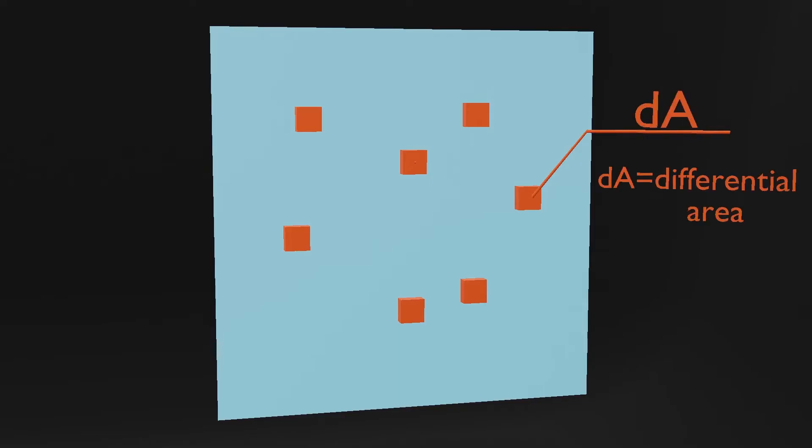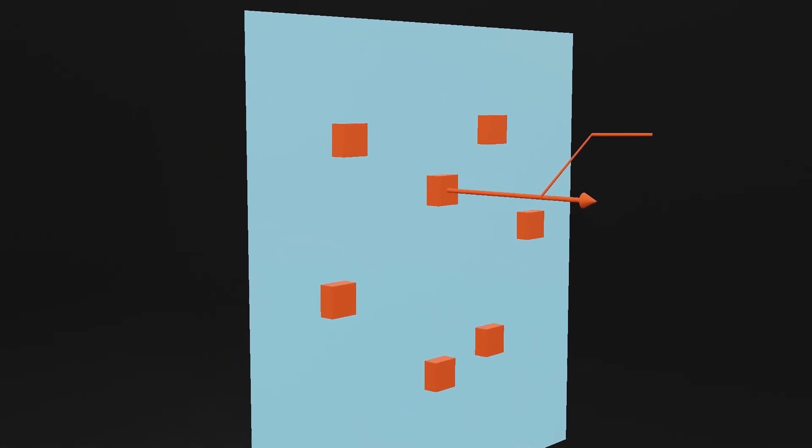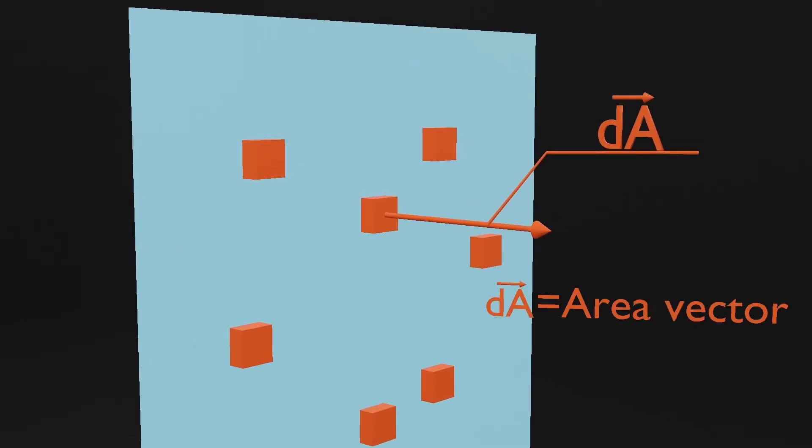Delta A is referred to as the differential area and we take a perpendicular vector to delta A called the area vector. The magnitude of this area vector is delta A.